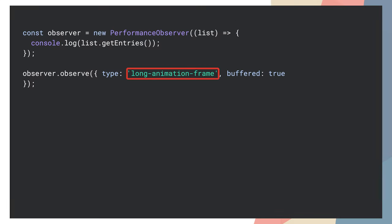The Long Animation Frames API is an option to measure blocking work. It measures tasks together with the following rendering update and adds information such as long-running scripts, rendering time, and time spent in forced layout and style. Collecting and analyzing this information allows you to identify and troubleshoot performance bottlenecks.